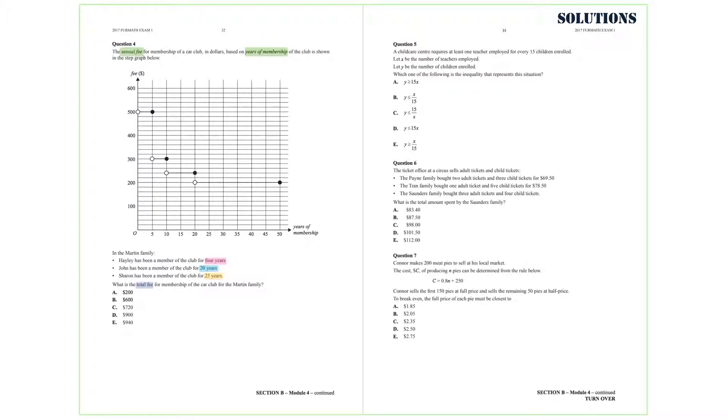The question is asking for the total fee for membership of the car club for the Martin family. Now, Haley, because she's been a member for 4 years, will pay $500 for the membership. John, being a member for 20 years, is going to pay $240 for the membership.